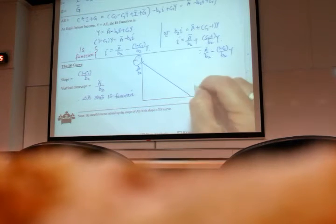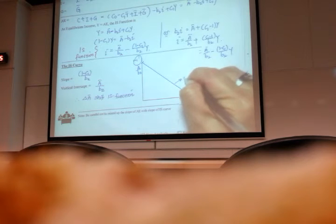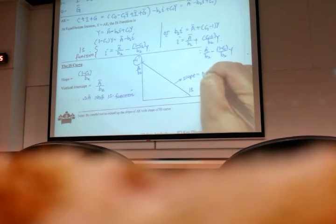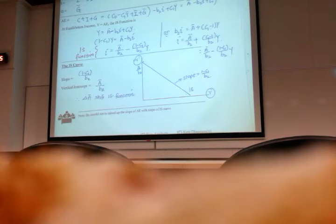So this is your IS and your slope is 1 minus C1 over D2.